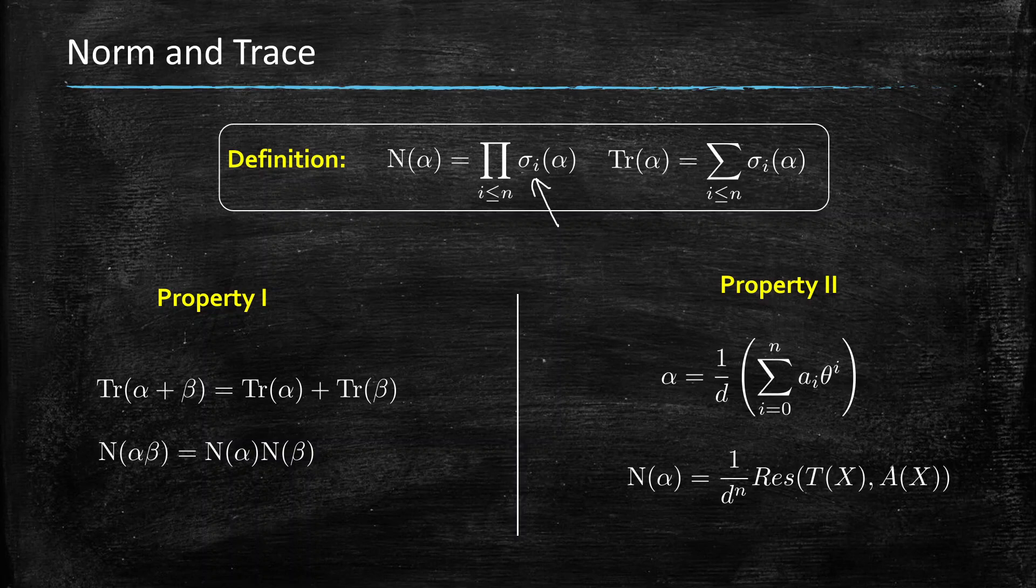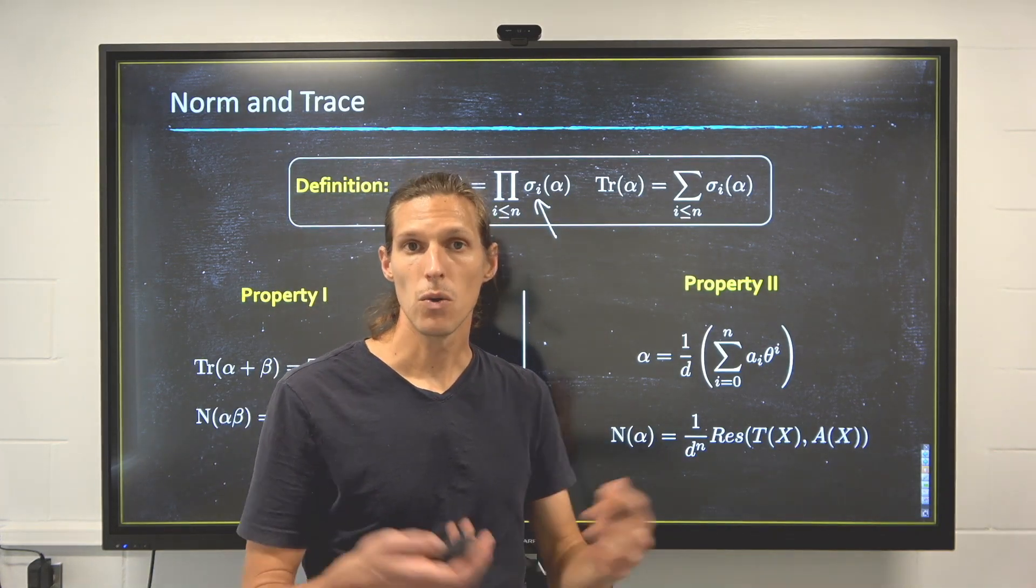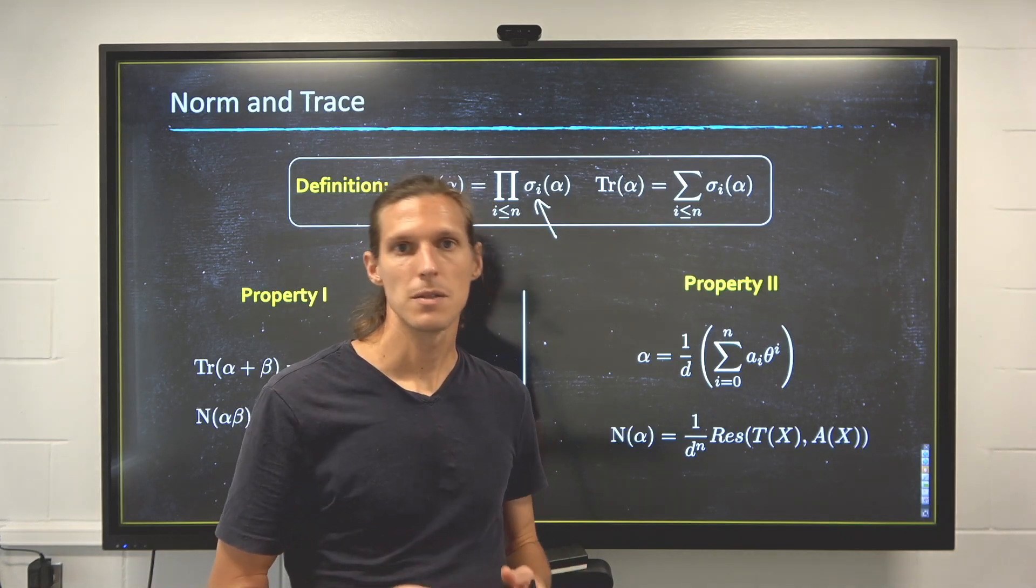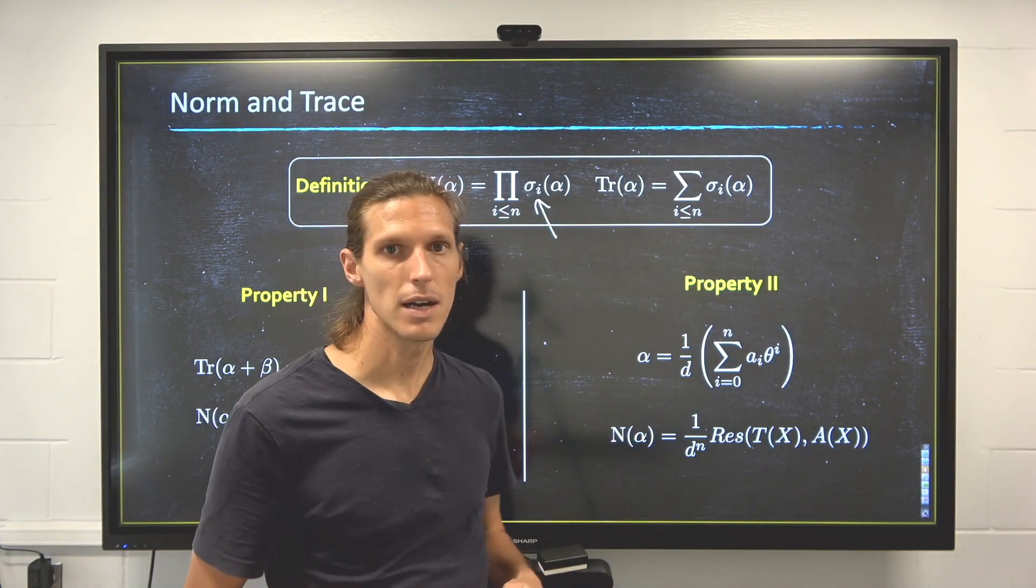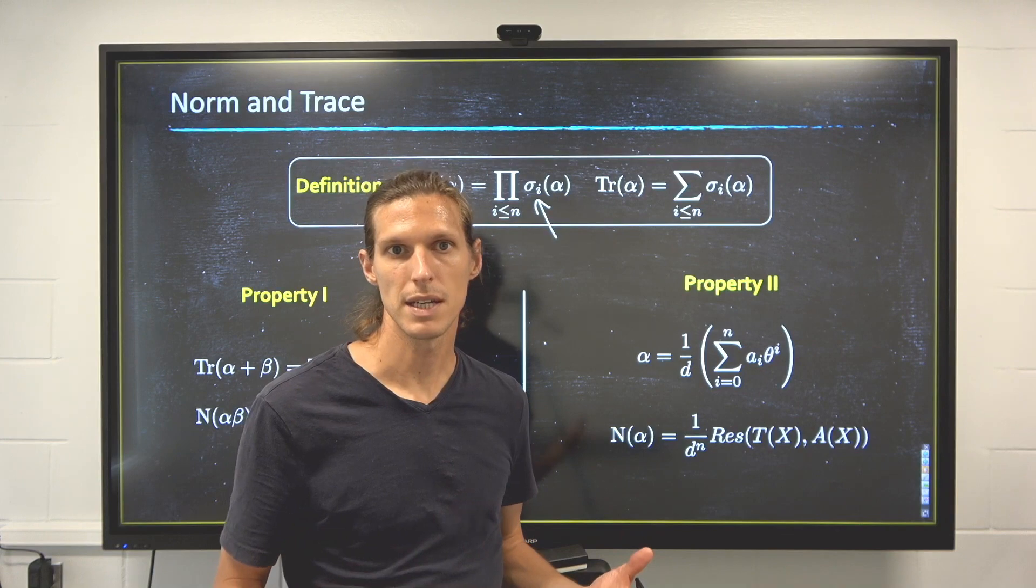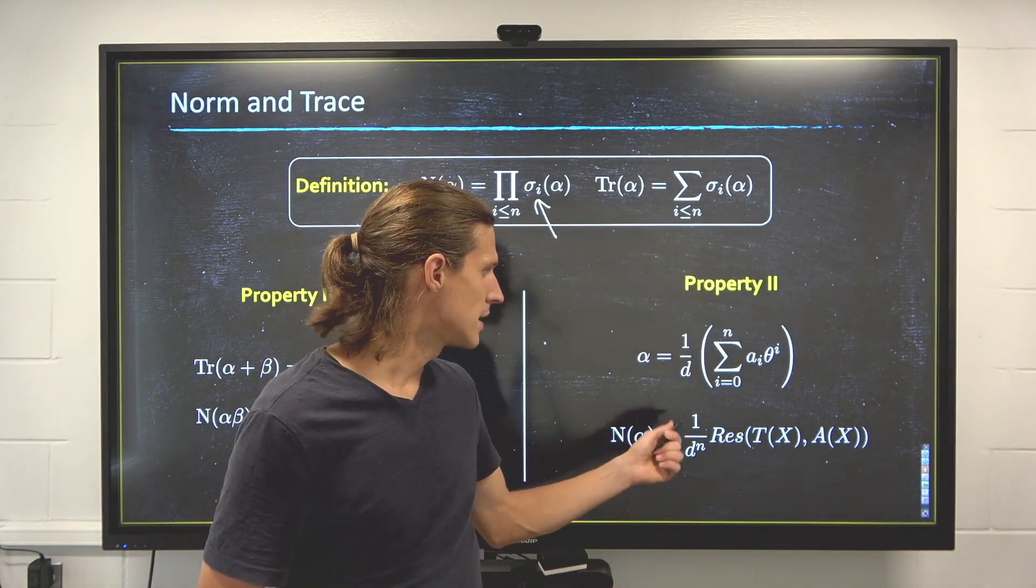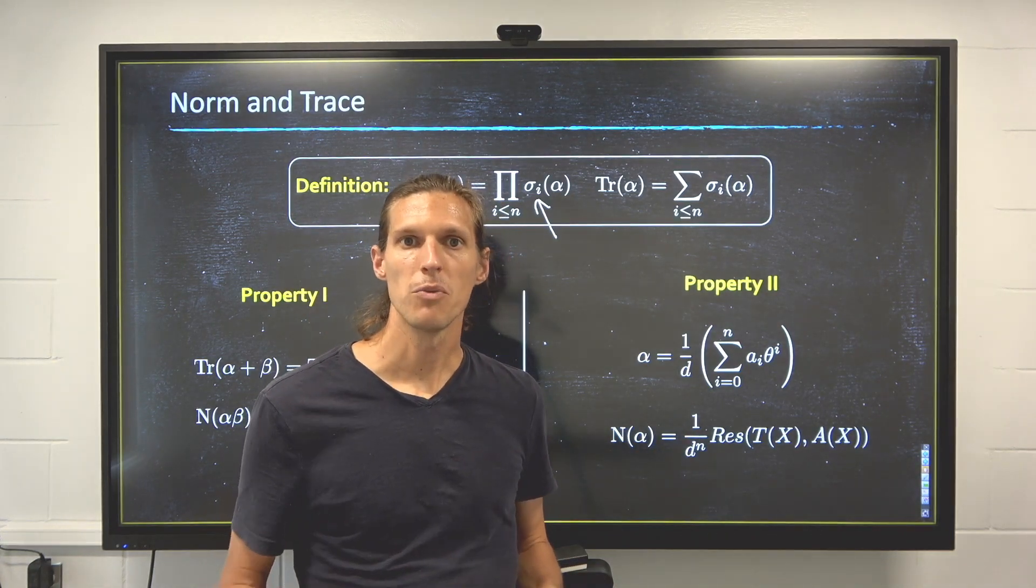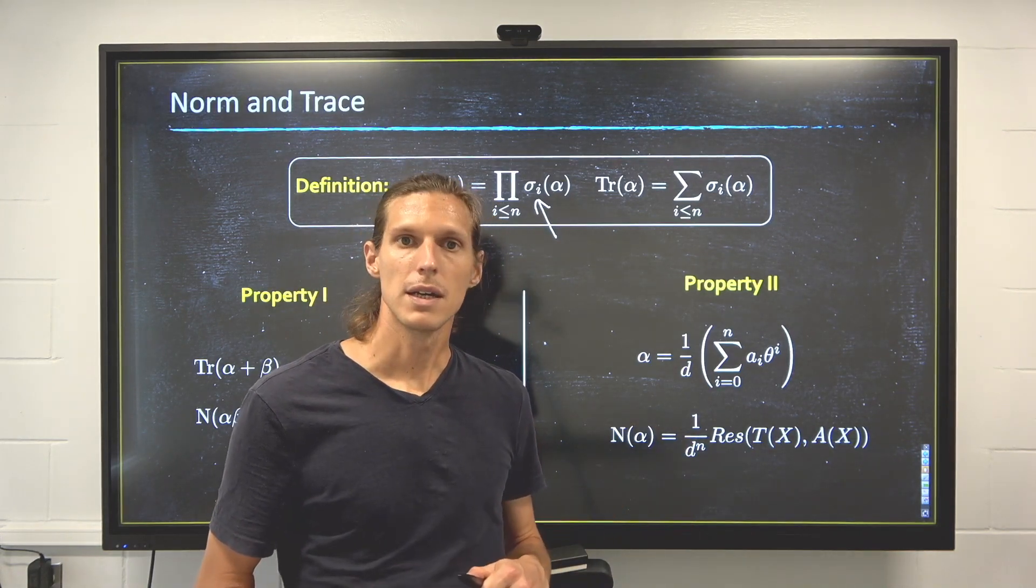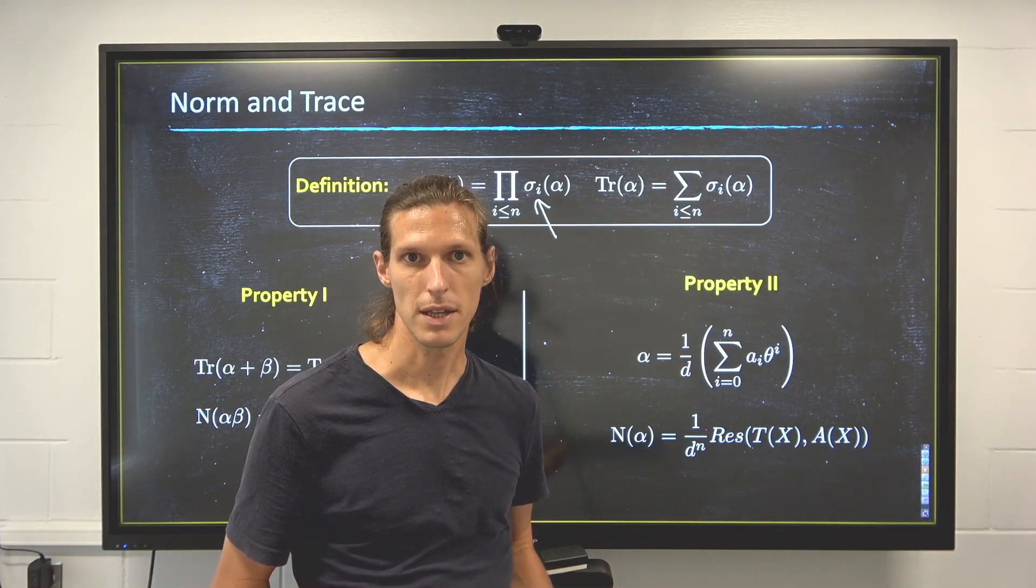Now one thing that is really important too is that if you do not have all the alpha i's but you want a very elementary way to calculate the norm, you can do it by expressing your element alpha as a linear combination of the powers of theta, expressing it as a polynomial in theta with coefficients in the rationals, and then taking the resultant between this polynomial and the polynomial that defines the field. So basically one determinant computation can give you the norm. So there's a very elementary way to calculate that.